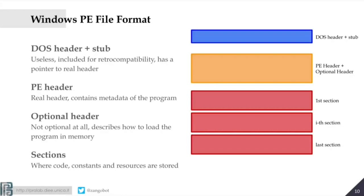Then we have the real headers — the PE header and the optional header — which describe how the program must be loaded in memory by the operating system. Finally, we have the juice of the program: the code, initialized data, and other relevant information stored as sections. Each section contains some content, which may be the actual executable code. As you can see, we cannot just flip one byte and hope malware detection is bypassed, because if you flip a byte, the executable is corrupted and no longer runs. I need to understand which gaps inside this complex structure I can use to include new content.